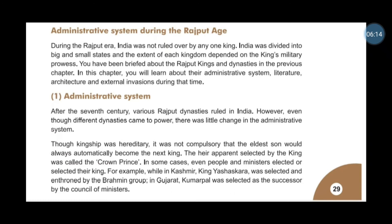The heir apparent selected by the king was called the crown prince. In some cases, even people and ministers elected or selected their king. For example, in Kashmir, king Yashokara was selected by the Brahmin group. In Gujarat, Kumar Pal was selected as the successor by the council of ministers.